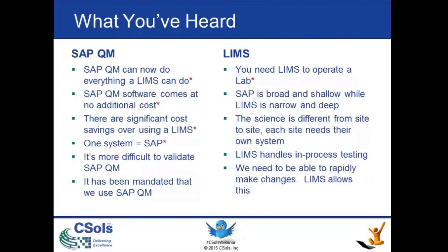As you can see from the list that Jeff has just put up, there are a number of different things that you've probably heard. Certain items have little red stars next to them — these are the ones we feel are very pertinent and we'll discuss them in more detail later. On the SAP QM side: SAP QM stands for the Quality Management Module, and LIMS stands for Laboratory Information Management Systems. One of the things you've probably heard is that SAP QM can now do everything a LIMS can do — we'll go through that in a few minutes.